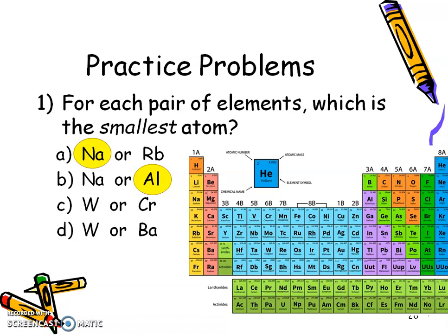So hopefully with C, you found those two. You figured out going down a group what the trend was and you circled chromium. And then for tungsten and barium, you found them here on the periodic table going across the period. And that trend led you to tungsten being the answer.